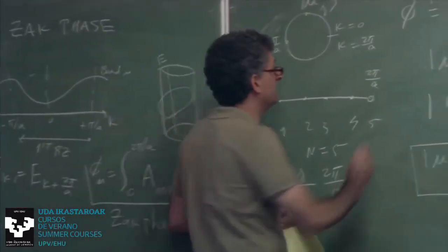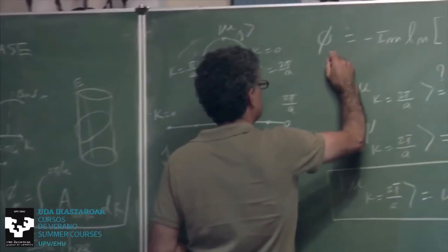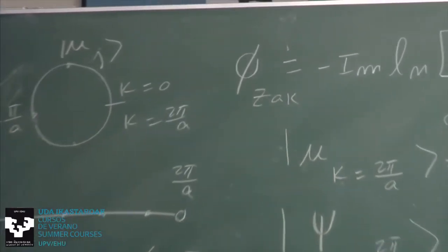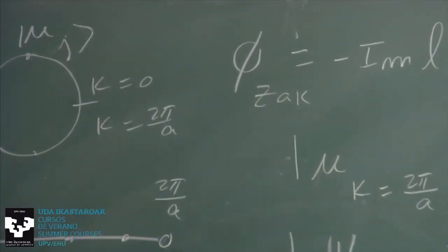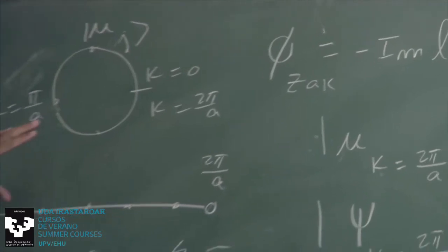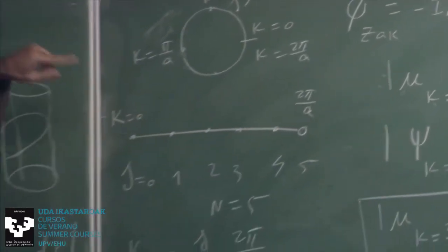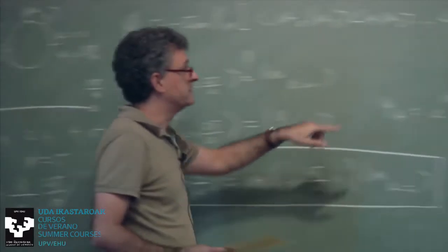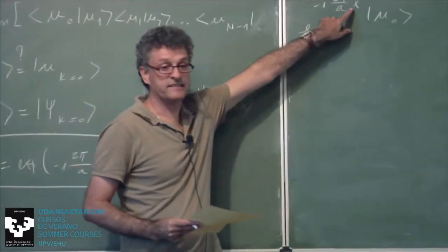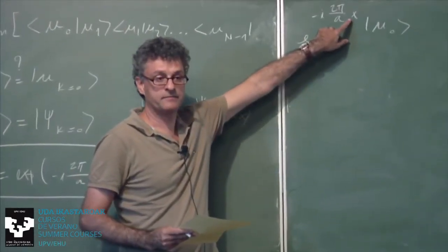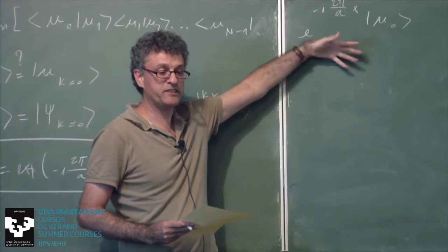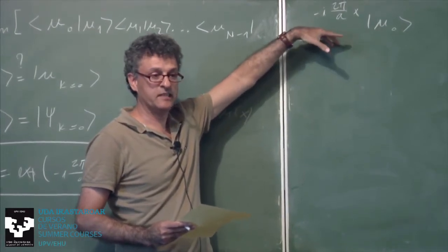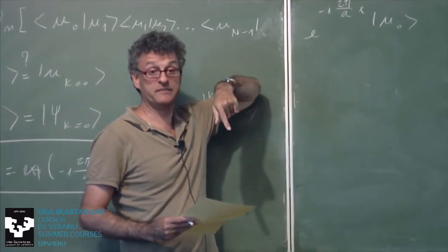So that's the discretized Zak phase. And you see that there is something funny about it, because it's no longer just an intrinsic property of the set of wave functions — it also contains the coordinate operator x. So there is some spatial information embedded in this quantity. It's just not a property of the abstract Hilbert space.